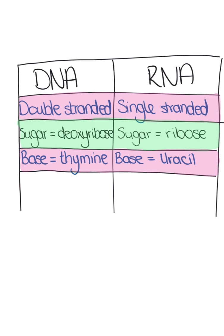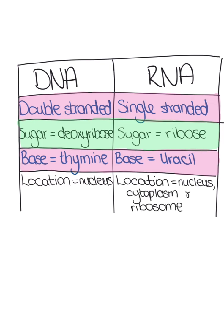One final difference between DNA and RNA is that DNA is located in the nucleus, whereas RNA is located in numerous places such as the nucleus, the cytoplasm and the ribosome. Since RNA is a single-stranded molecule and thus smaller, it is able to leave the nucleus of the cell.